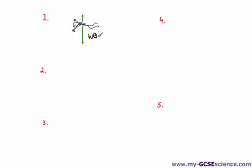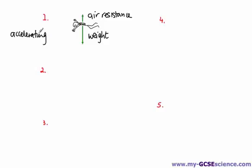We have two forces acting on the parachutist. The first one goes downwards and is due to gravity — we call that force the weight. Because of gravity the person is pulled towards the earth, and that's their weight. The other force acts in the opposite direction: air resistance, acting in the upward direction. We've got weight pulling down and air resistance pushing up. From the previous video, remember the longer arrow represents a bigger force — so the bigger force going downwards means the person is accelerating downwards. We've got a slightly larger arrow showing a larger upward force.